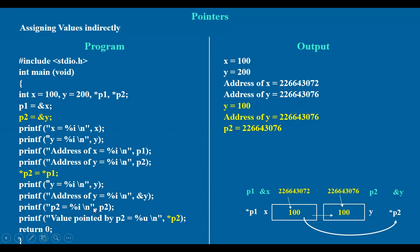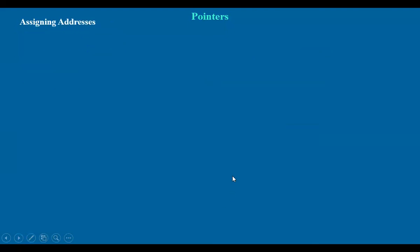If you want to see star p2, it means the value at the location p2 points to — that must be 100. The value pointed by p2 is 100, because the old value 200 is replaced by the new value 100. This is the way we assign values indirectly. Now, if you want to assign addresses instead of values, let us look into how that happens.